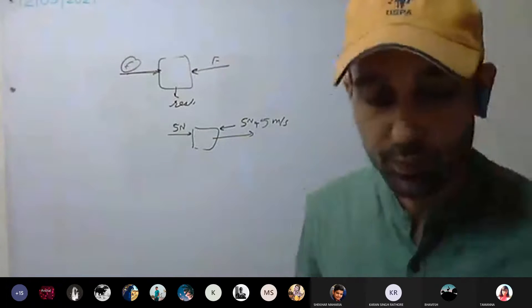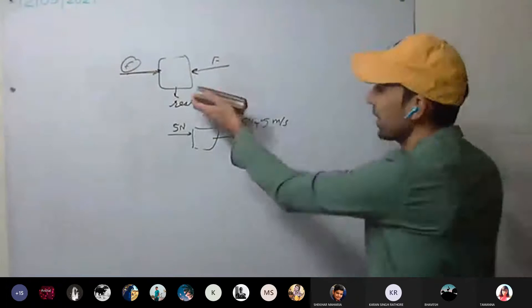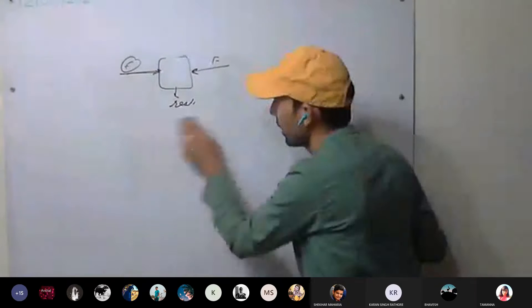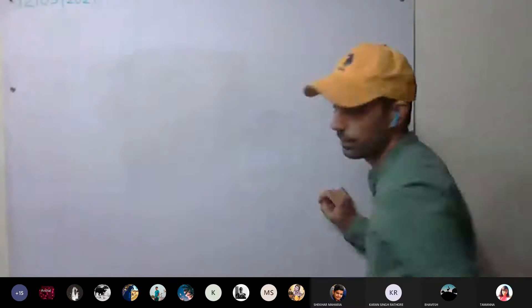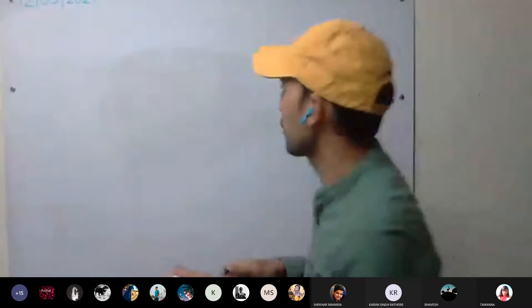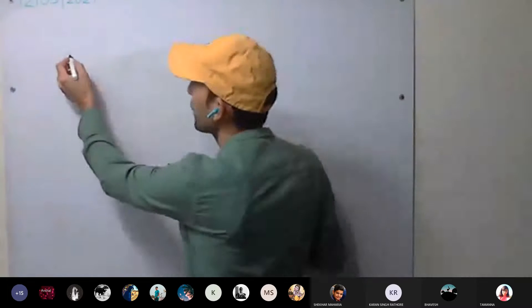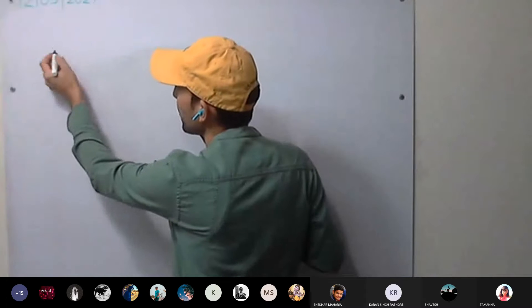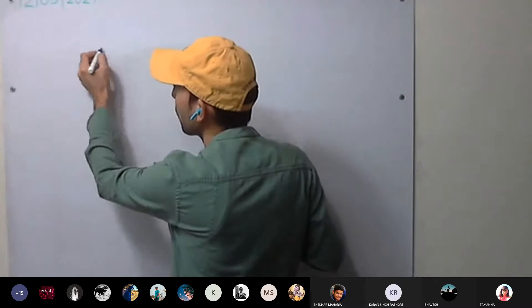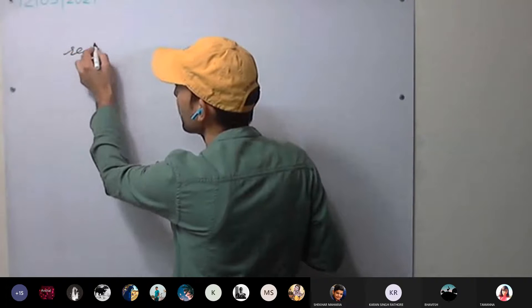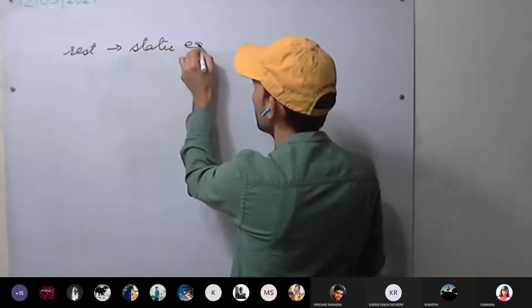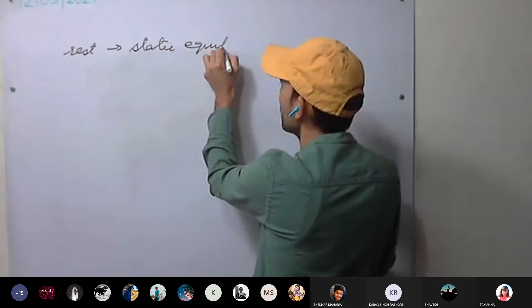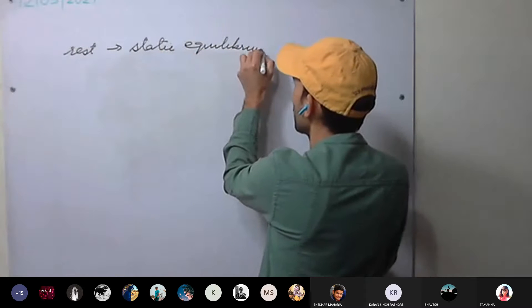There are two kinds of equilibrium. One is static — the rest one. The other is in motion — that is dynamic. So when a body is in a state of equilibrium of rest, it will be called static equilibrium.